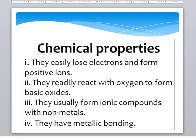Some chemical properties of metals: they easily lose electrons and form positive ions. They readily react with oxygen to form basic oxides. They usually form ionic compounds with non-metals. And they have metallic bonding.